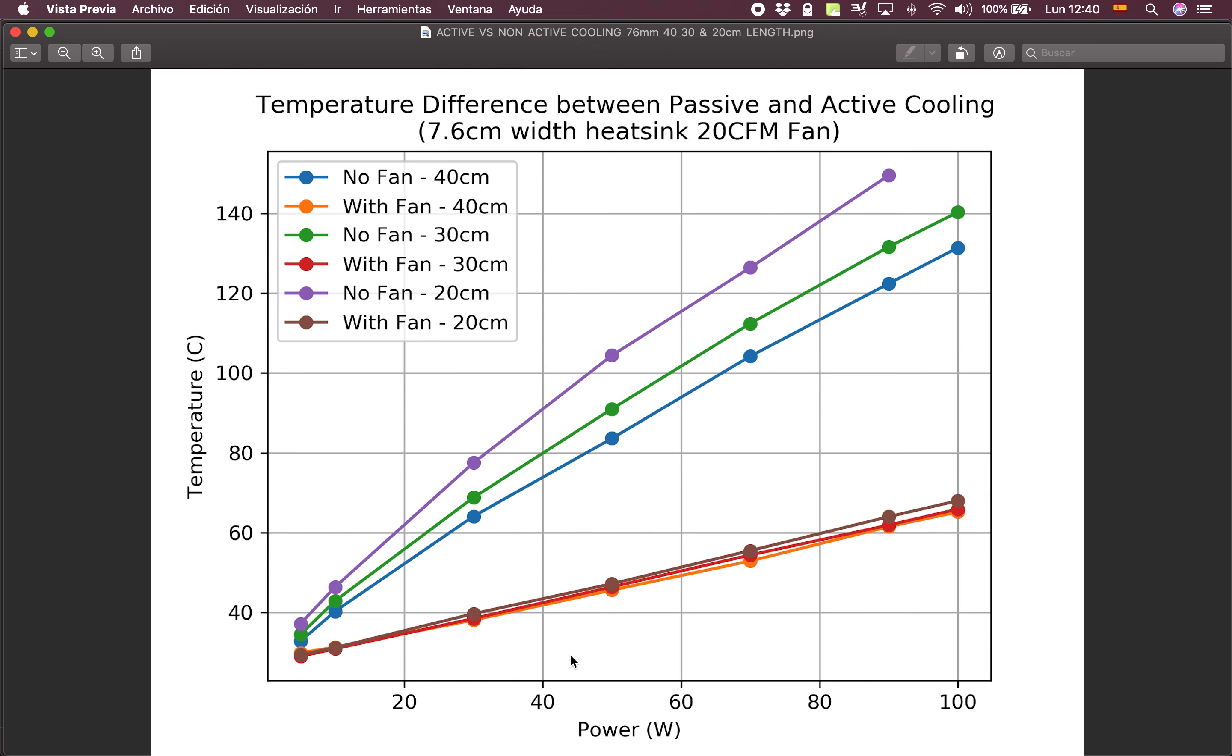What is more interesting is the behavior in the case of active cooling with a 20 CFM fan located just behind the resistance, and that corresponds to the brown line. As one can see, the difference between the temperatures for any of the three lengths is very minimal.